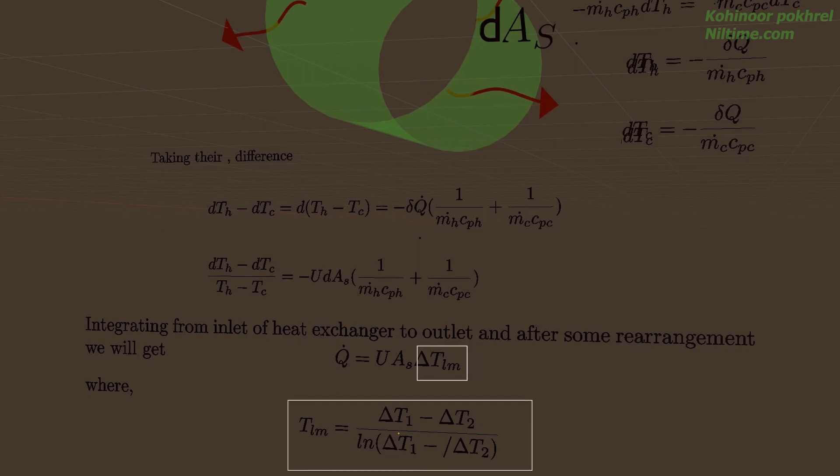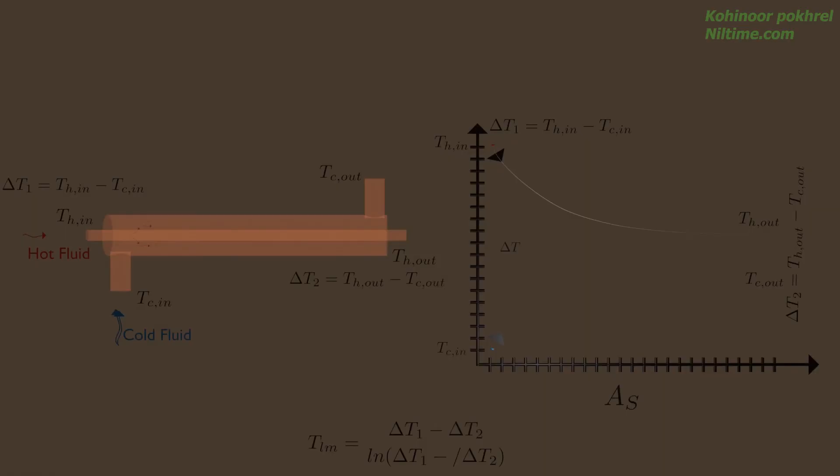Where TLM is the log mean temperature difference. So as you can see, temperature difference between the hot and cold fluids varies along the heat exchanger, so it is convenient to have a mean temperature difference. Notice how the white line, that is delta T, varies along the temperature curve.